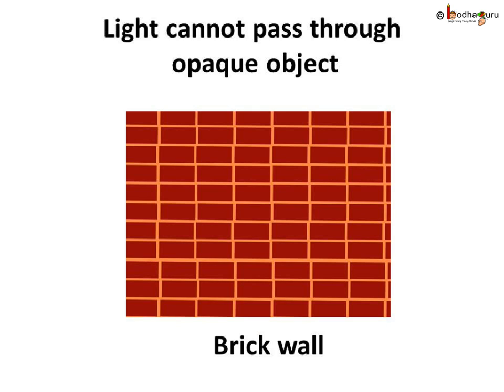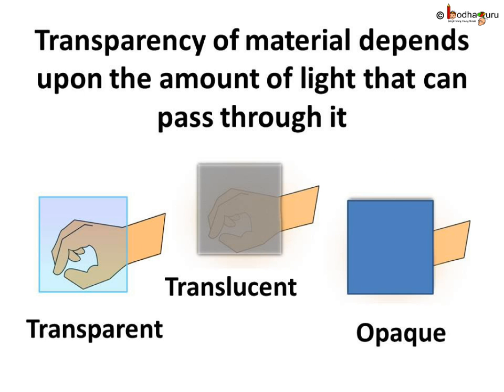Opaque materials like a brick wall, and even we humans, completely block the light. None of the light passes through. The majority of light is sent back by the object, and hence we cannot see through the opaque material. So now we conclude that a given object or material could be transparent, translucent or opaque, depending on whether it allows light to pass through it completely, partially, or not at all.